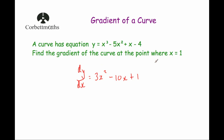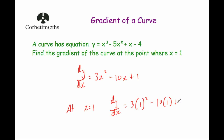We've been asked to find the gradient at x equals 1. Substituting into dy by dx gives 3 times 1 squared minus 10 times 1 plus 1. That is 3 minus 10 plus 1, which equals −6. So the gradient of the curve at the point where x equals 1 is equal to −6.